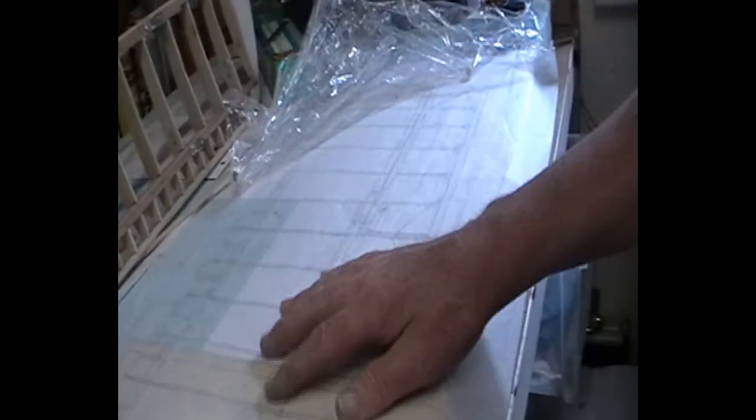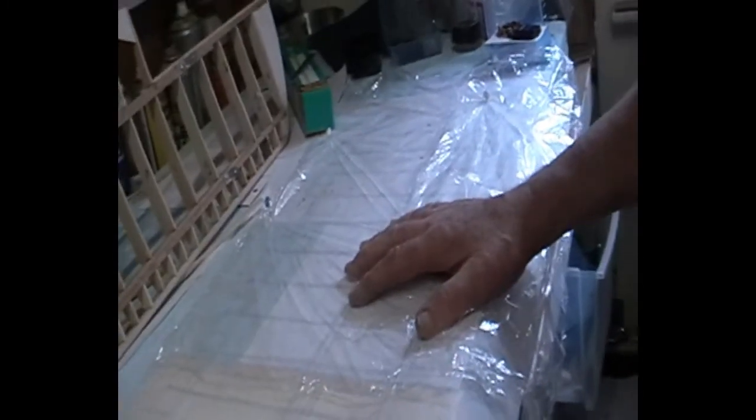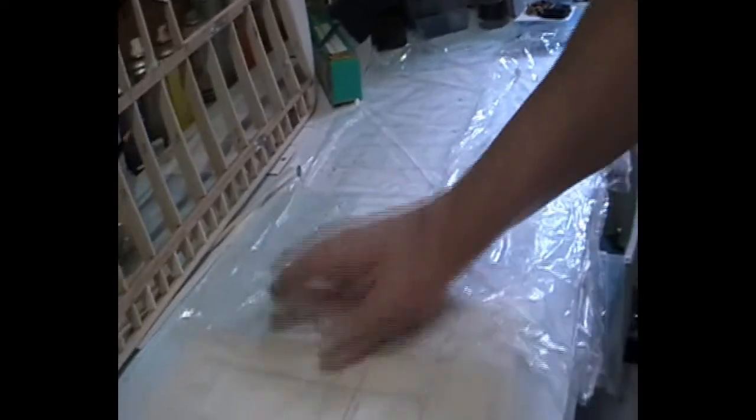As you can see it's all drawn out exactly like the real plan. Then you cover it over with your cling film, again from your wife's drawer, the kitchen drawer. Put all the cling film over and then build the wing.